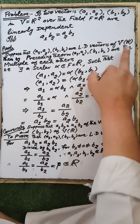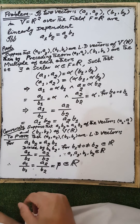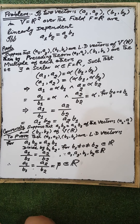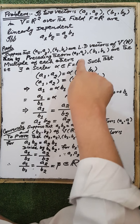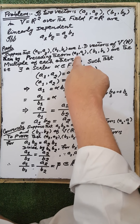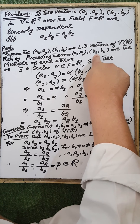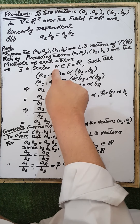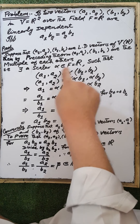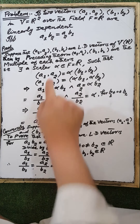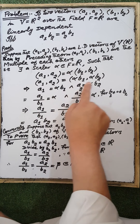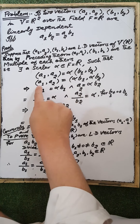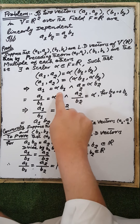These are vectors of the vector space V over the field R. By a previous theorem, when two vectors are linearly dependent, one will be the scalar multiple of the other. Suppose that the first vector is a scalar multiple of the second vector. Then by definition, there exists a scalar alpha in the field such that alpha multiplied by the second vector equals the first vector. After rearrangement, (a1, a2) = alpha·(b1, b2).